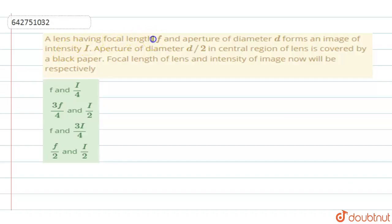A lens having focal length f and aperture of diameter d forms an image of intensity I. An aperture of diameter d/2 in the central region of lens is covered by a black paper.